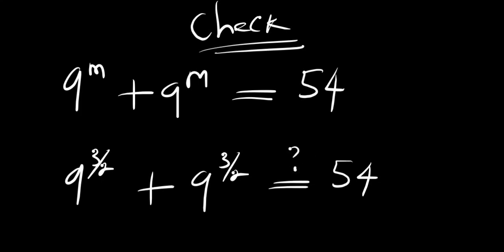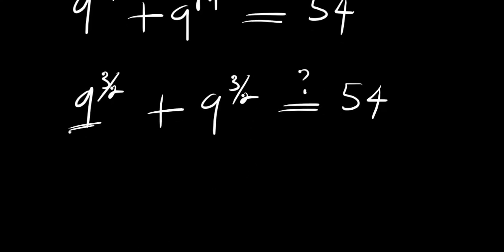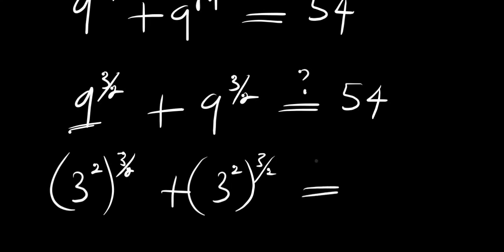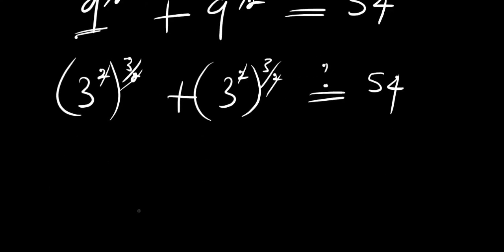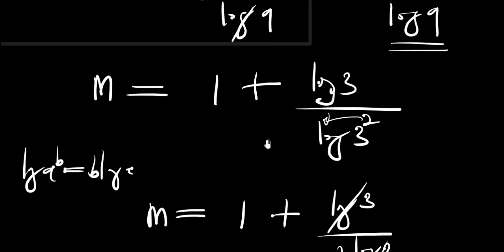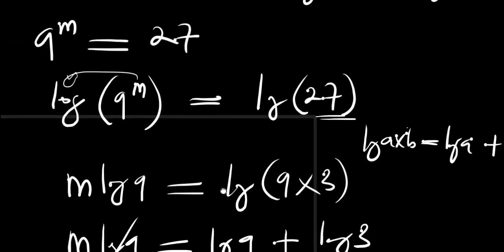Remember, 9 is a perfect square: 9 equals 3 power 2. So we have (3 power 2) all raised to the power 3 over 2. Multiplying the exponents, 2 and 3 over 2 cancel to give 3 power 3, which is 27. So we get 27 plus 27, which equals 54 — confirming that the answer m equals 3 over 2 is correct.